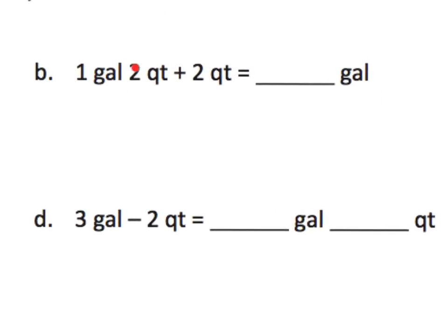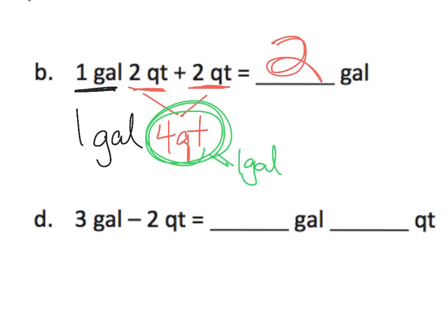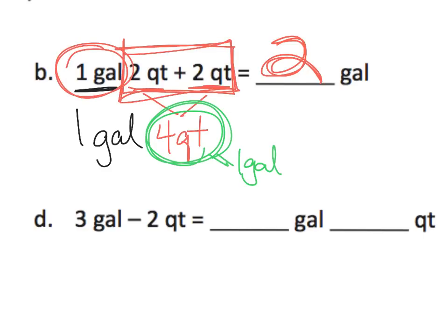Let's zoom in. So one gallon and two quarts plus two more quarts — one way to think about it is to add like units. We've got gallons, and then we've got some quarts and some more quarts, so those quarts can be added together to give us four quarts, and then we have the one gallon still. So when we add these two together we end up with one gallon plus four quarts. But we need to remember that four quarts equals one gallon.